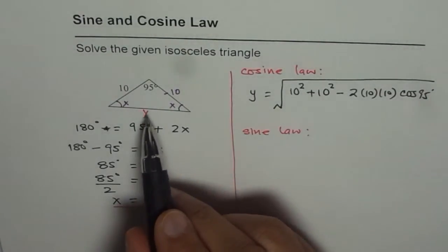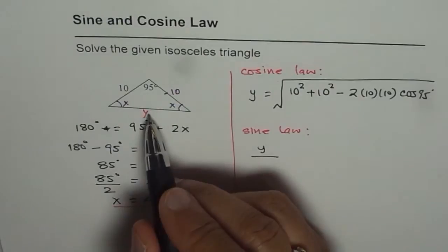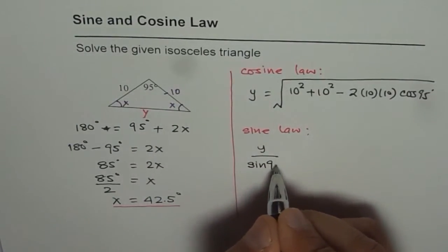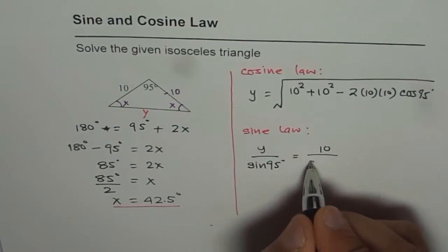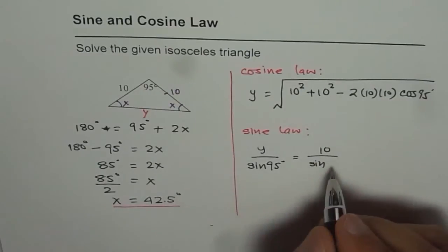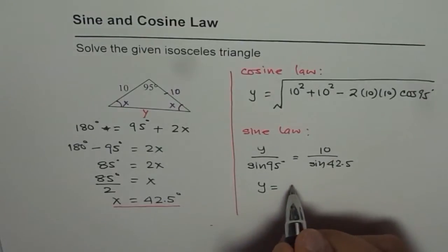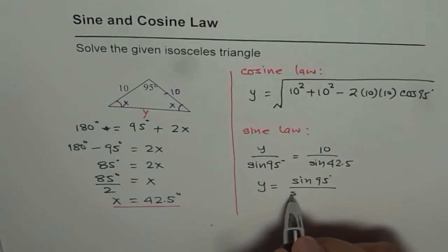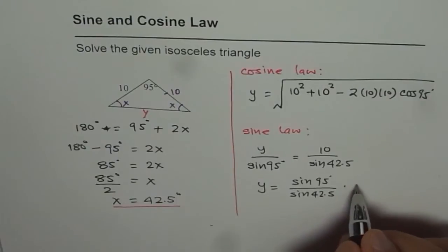Or we can use sine law which is, y divided by the given angle, which is 95 degrees, which is sine of 95 degrees, is equal to 10 divided by sine of 42.5 degrees. So from here we get y equals sine of 95 degrees divided by sine of 42.5 degrees times 10.